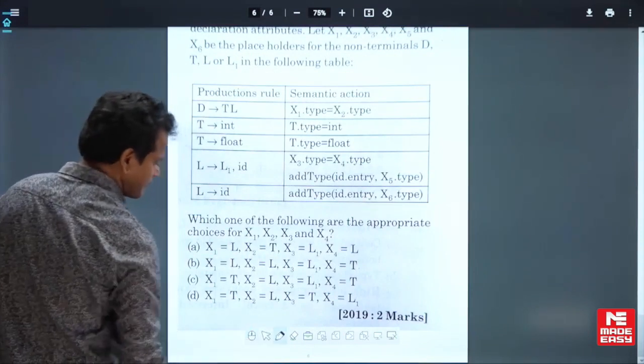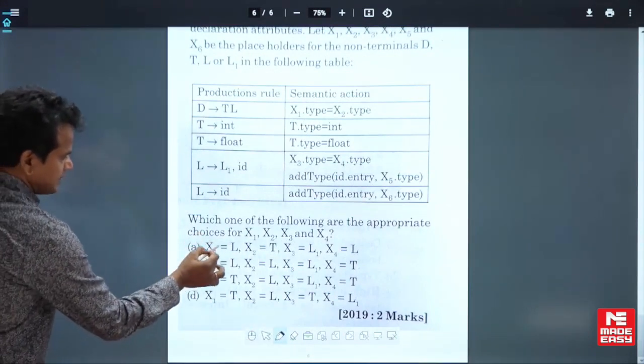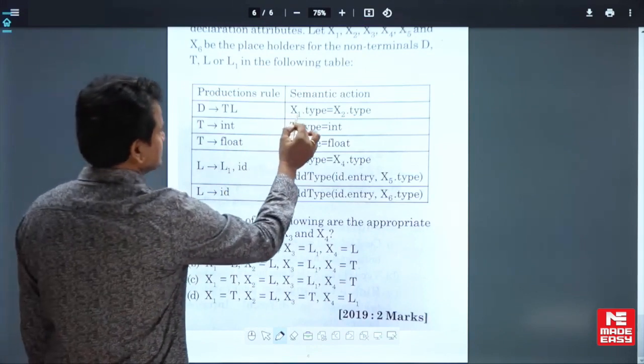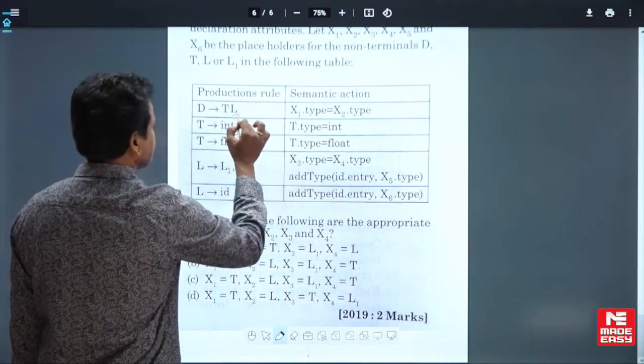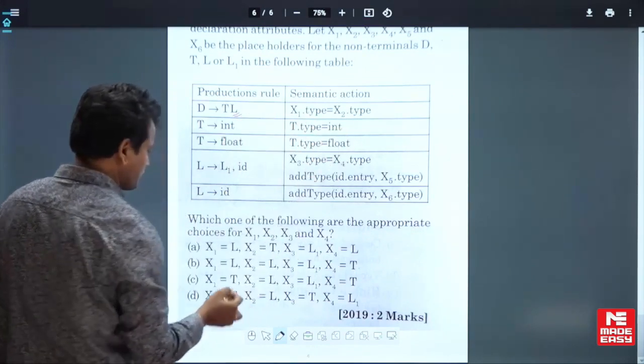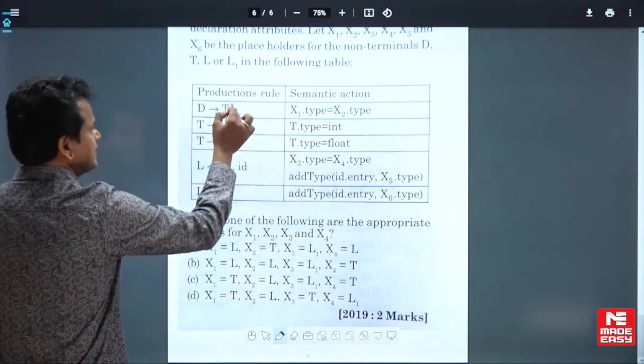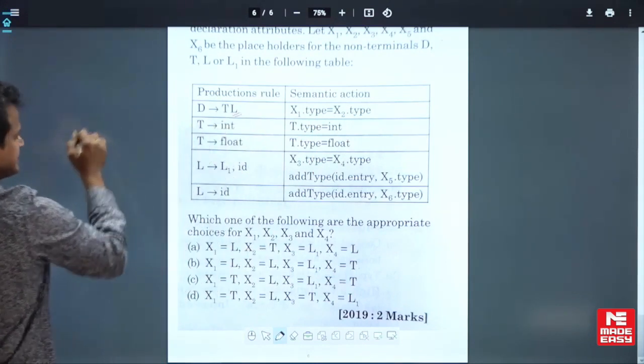Here, just go for the options. x1 equal to L. So suppose x1 is L, then what is x2? x2 is given as T. So for L, the child value...